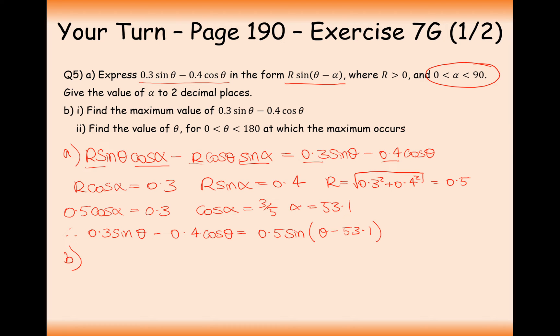Now part B, find the maximum value of this trigonometric expression. For a max value, because the function is positive, sine must equal 1. Therefore, the maximum value is going to be 1 times 0.5, which is 0.5.